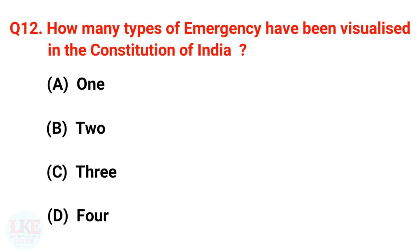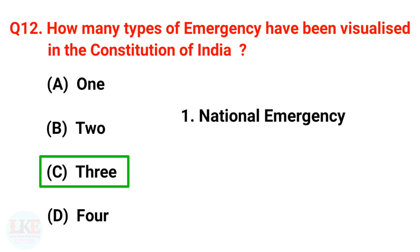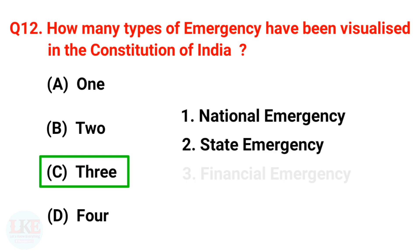Question number 12: How many types of emergency have been visualized in the Constitution of India? The right answer is option C, 3. The Constitution of India gives the President the authority to declare three types of emergencies: first, National Emergency; second, State Emergency; and third, Financial Emergency.